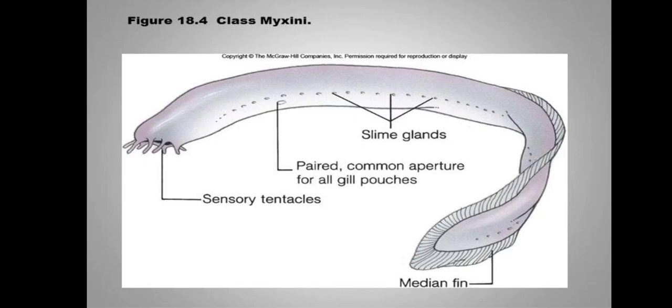This is the diagram. Here you can see the sensory tentacles which surround the mouth, and the slime glands in the ventrolateral position which secrete the slimy secretions.